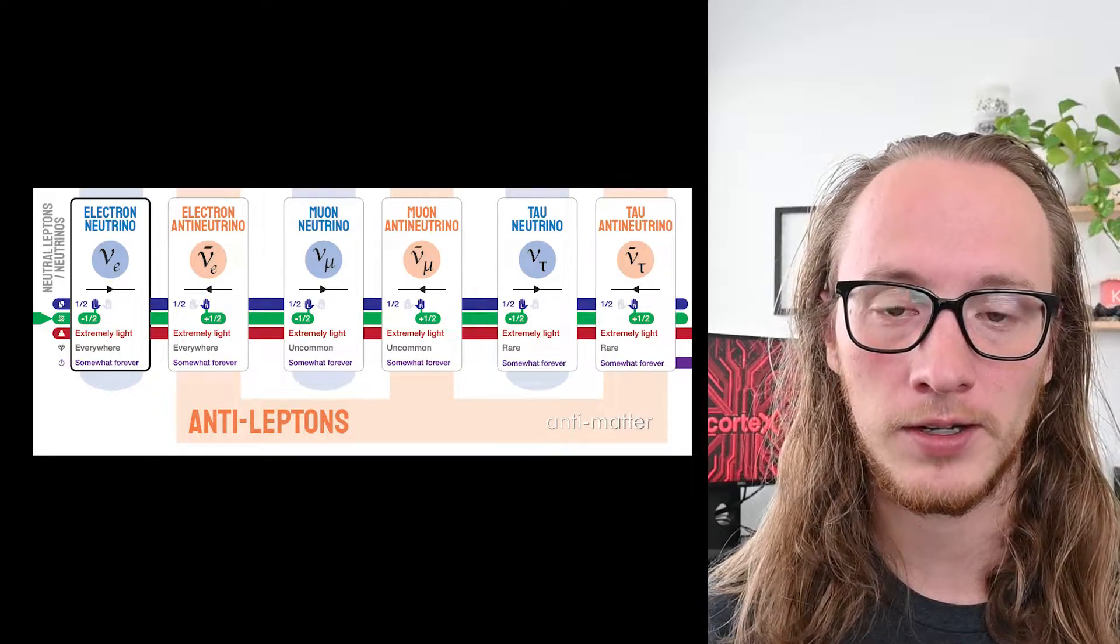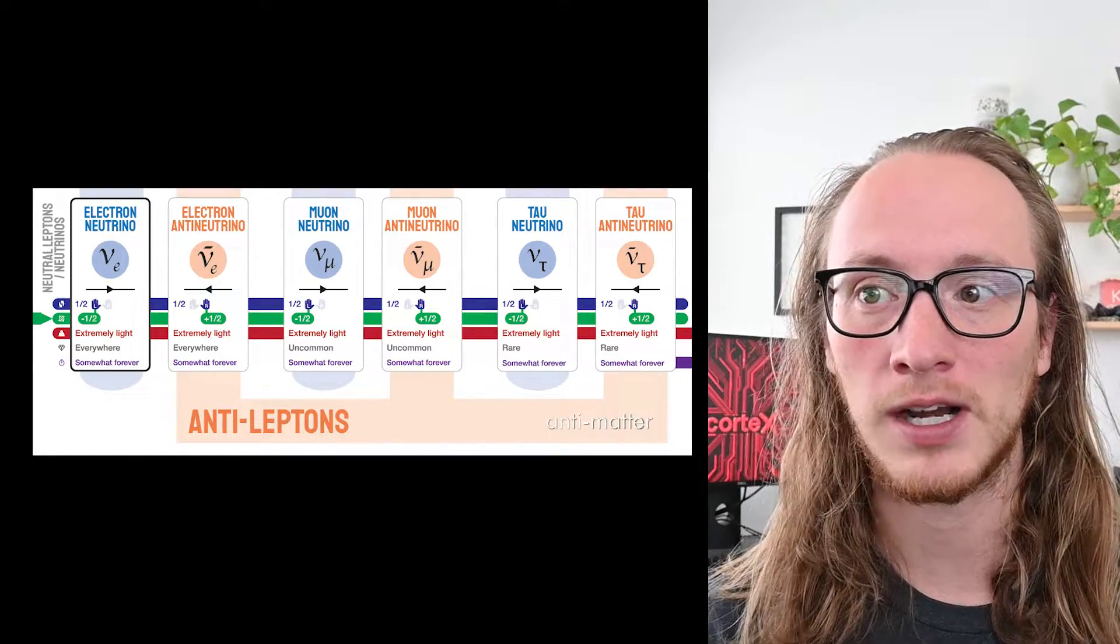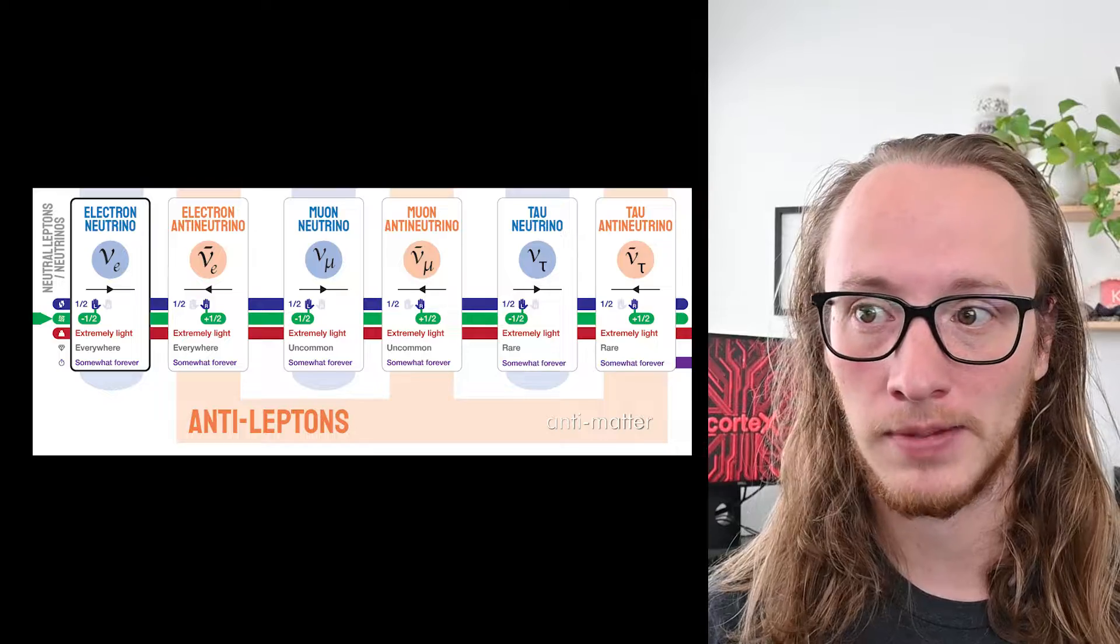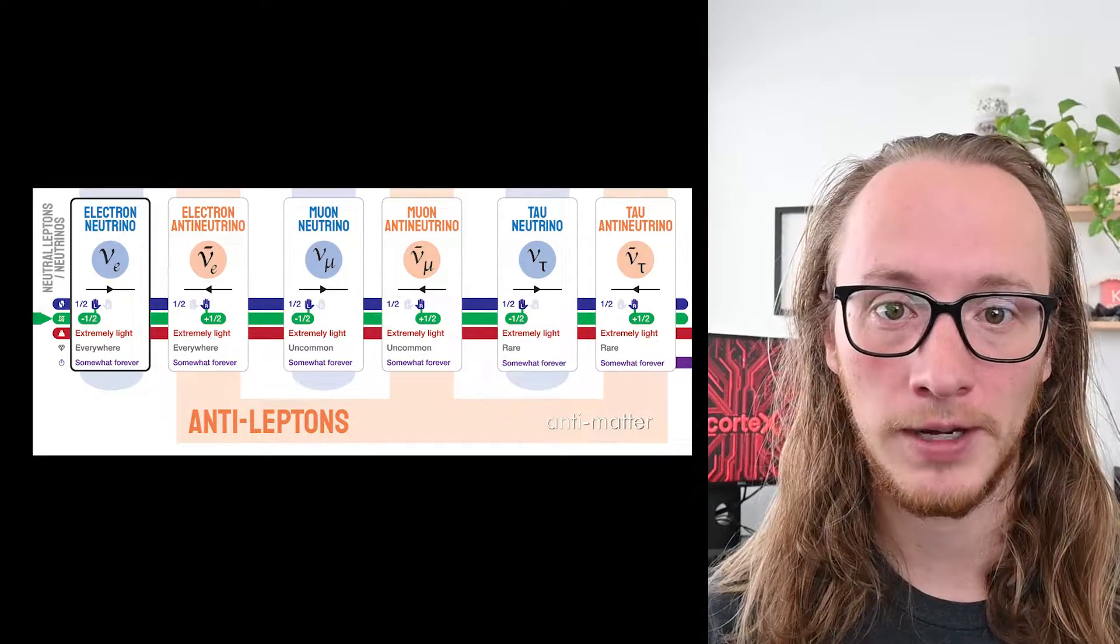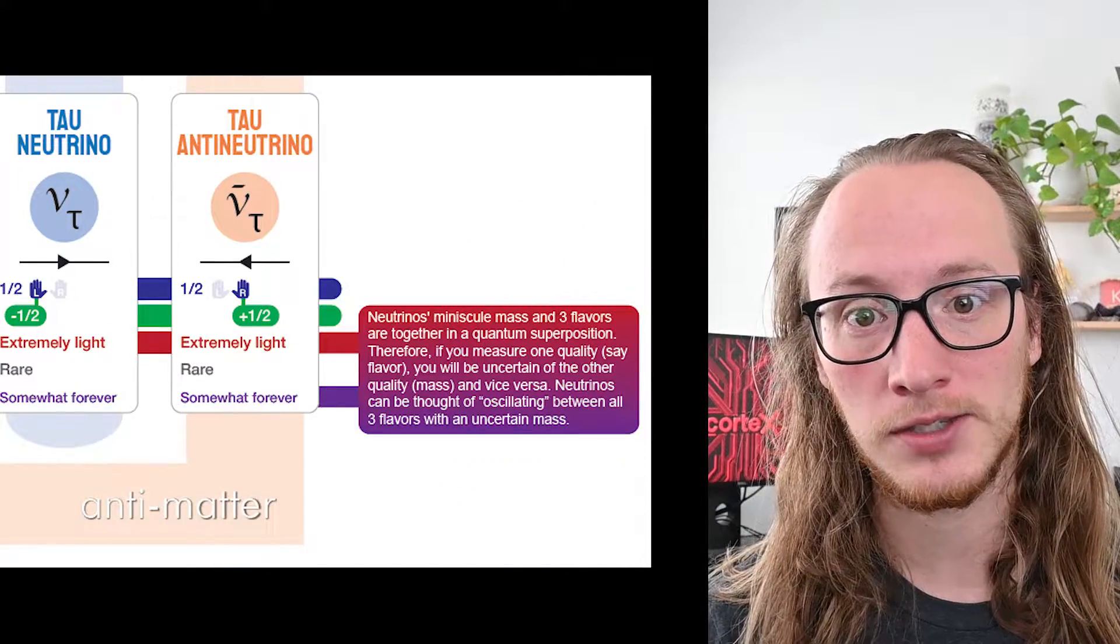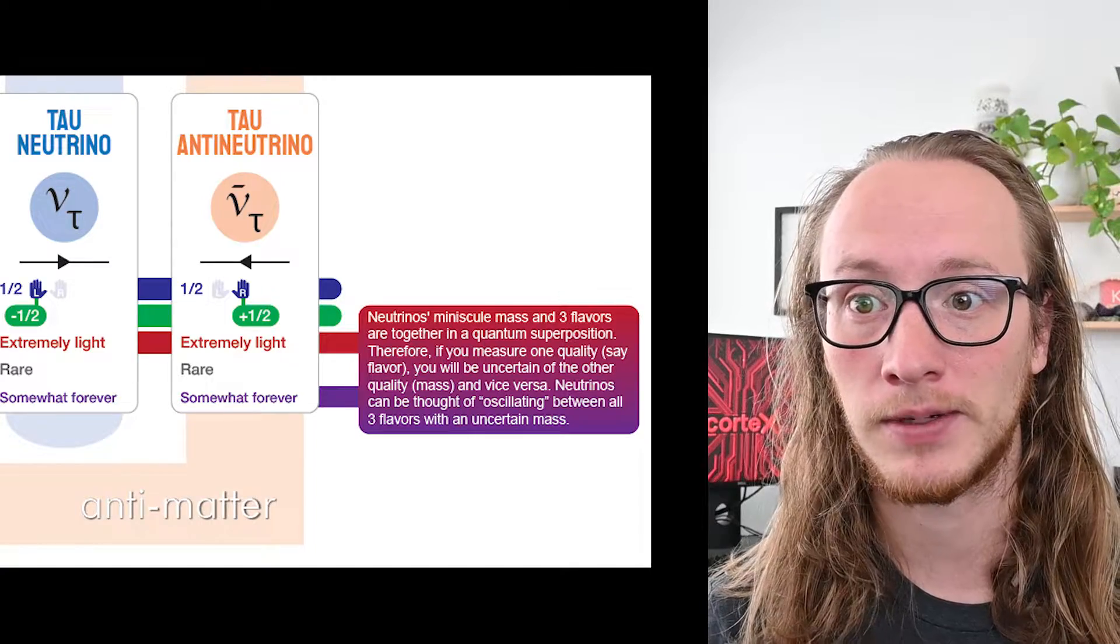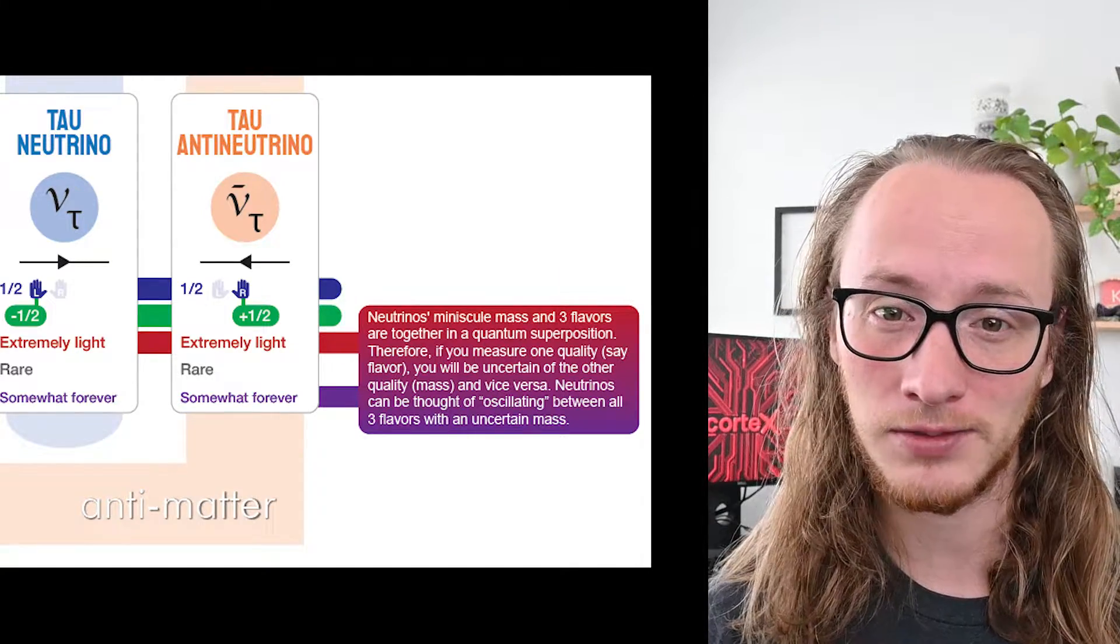Neutrinos are very interesting particles, which I learned a lot about through this process. They have minuscule mass, very very small, and three different flavors. They oscillate between these three different flavors and oscillate between their different masses. They do last forever, basically, but they're oscillating between these.